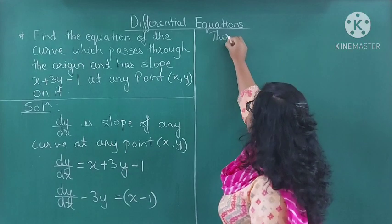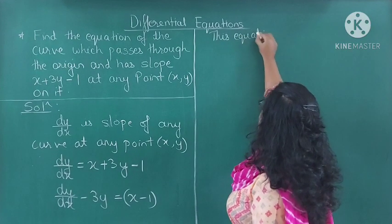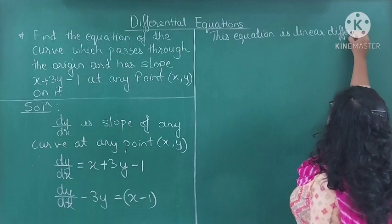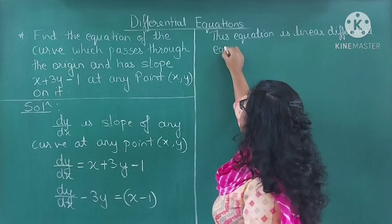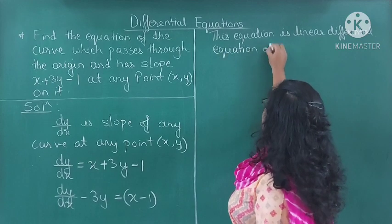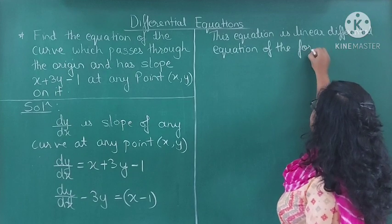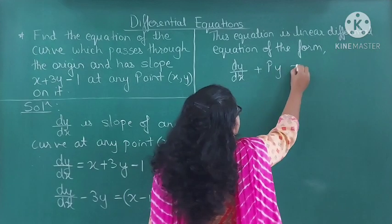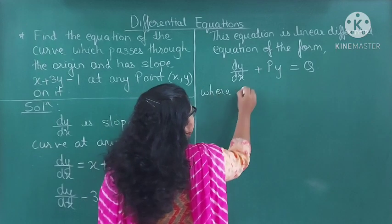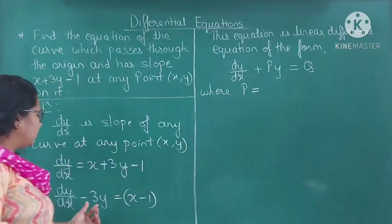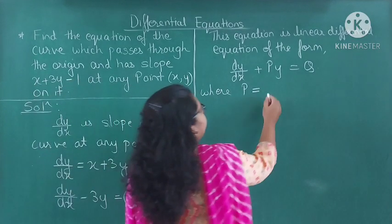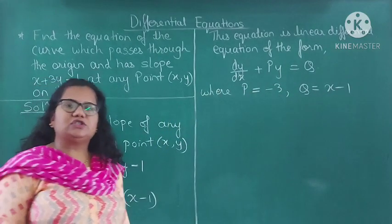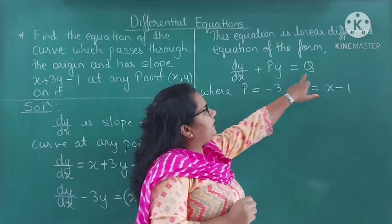This equation is a linear differential equation of the form dy/dx plus P·y equals Q, where we have studied this standard form. The coefficient of y is minus 3. So P is minus 3 and Q is x minus 1. T and Q are functions of x.